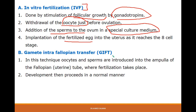In the GIFT technique, we get the oocyte from the female and the sperm from the male and introduce them into the fallopian tube to give a chance for fertilization to take place. The development will then happen inside the normal mother.